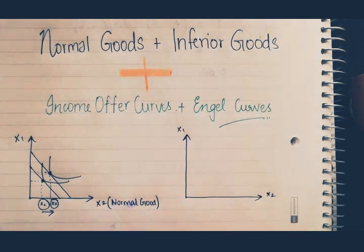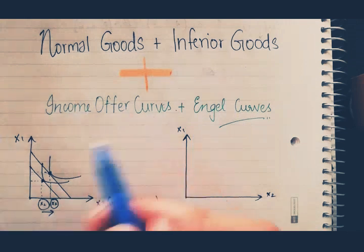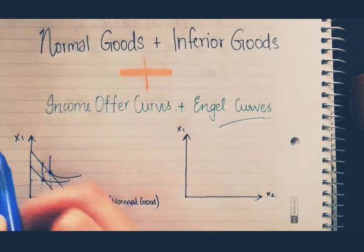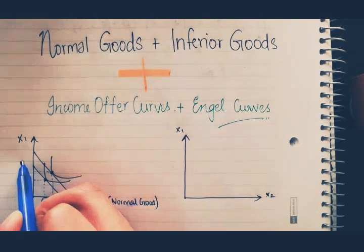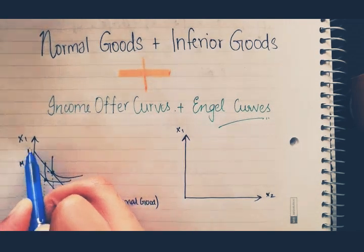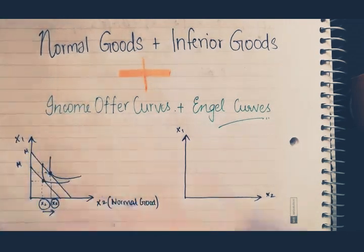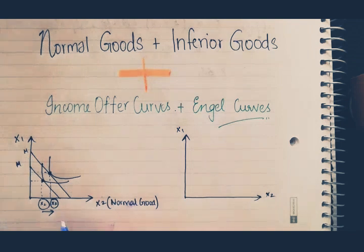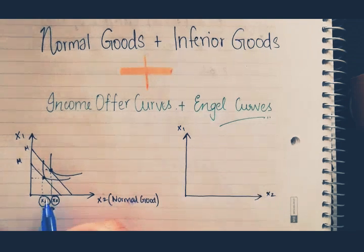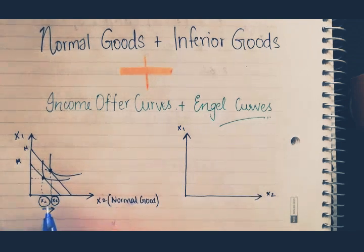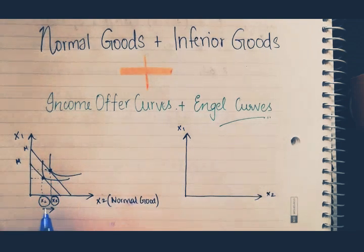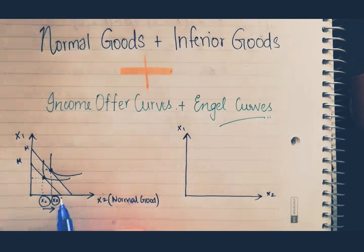Just understand that this shift is your change in income, and because of the change in income, you are going to consume more of X2.